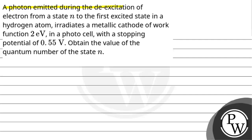Hello, let us read this question. A photon emitted during the de-excitation of electron from a state n to the first excited state in a hydrogen atom irradiates a metallic cathode of work function 2 eV in a photocell with a stopping potential of 0.55 V. Obtain the value of the quantum number of the state n.